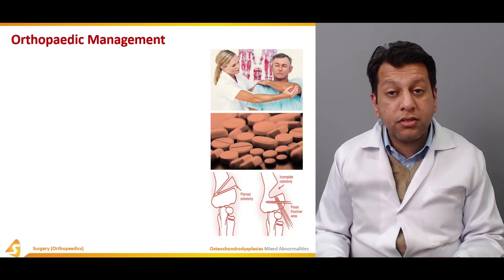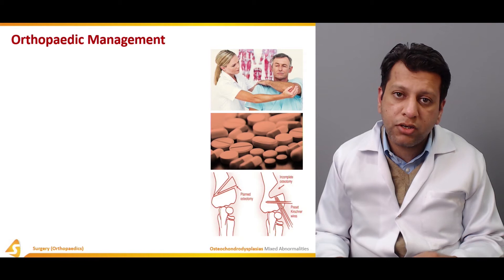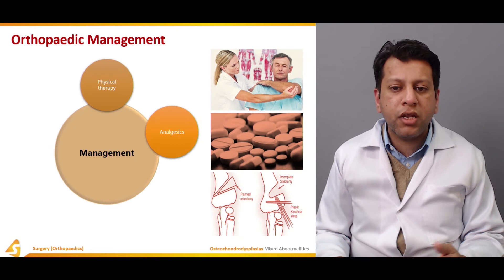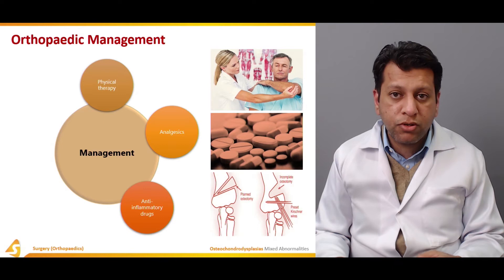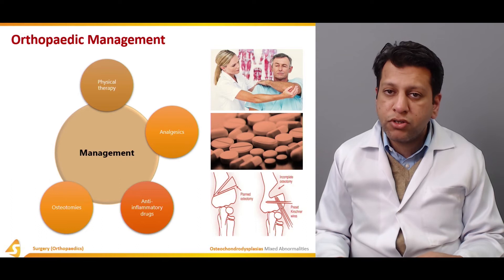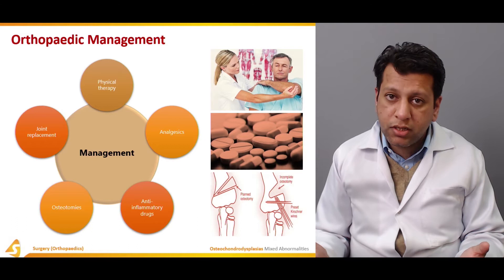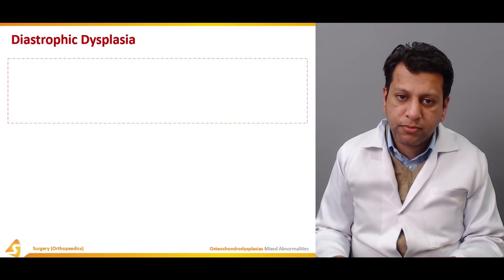Regarding orthopedic management: this is a genetic disease and the disease itself cannot be treated, but yes, the malalignment and weakness of the bone can be addressed. Management includes physiotherapy, analgesics to relieve pain, anti-inflammatory drugs to reduce swelling and associated pain, multiple osteotomies depending on different levels of deformity, and finally, if the joint has become too arthritic, joint replacement.